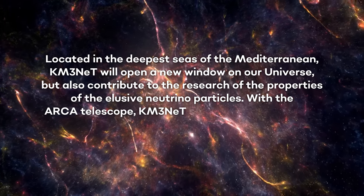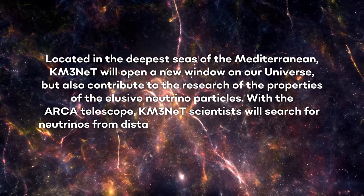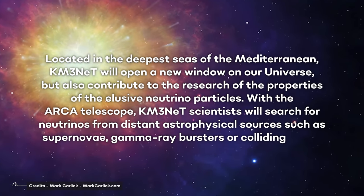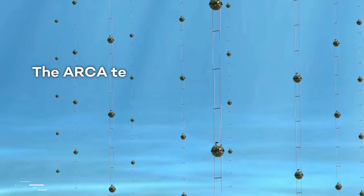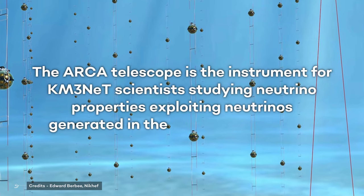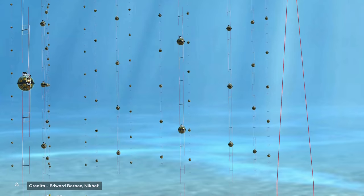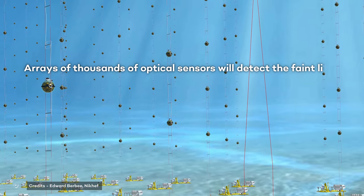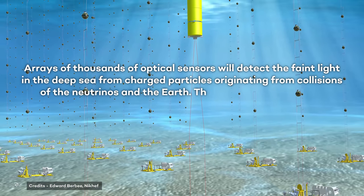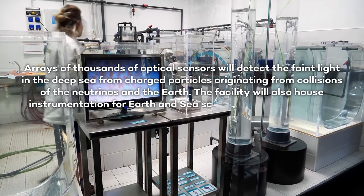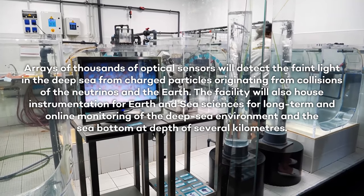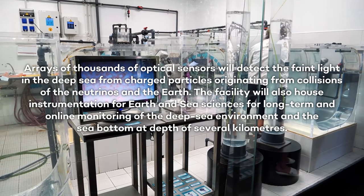With the ARCA telescope, KM3NET scientists will search for neutrinos from distant astrophysical sources such as supernovae, gamma-ray bursters, or colliding stars. The ARCA telescope is the instrument for KM3NET scientists studying neutrino properties exploiting neutrinos generated in the Earth's atmosphere. Arrays of thousands of optical sensors will detect the faint light in the deep sea from charged particles originating from collisions of the neutrinos and the Earth. The facility will also house instrumentation for Earth and sea sciences for long-term and online monitoring of the deep sea environment and the sea bottom at depths of several kilometers.